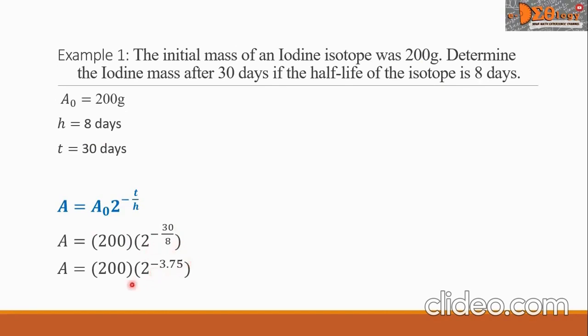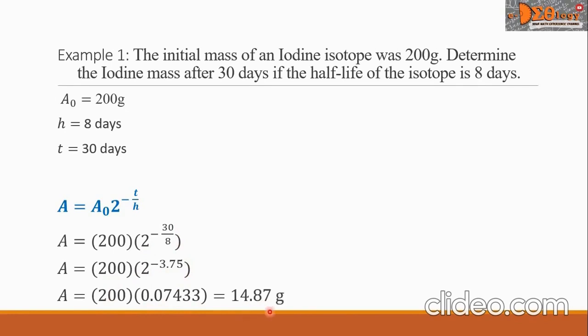Simplifying further, 2 raised to negative 3.75 equals 0.07433. We multiply by 200 and the answer is 14.87. This is the iodine mass after 30 days.